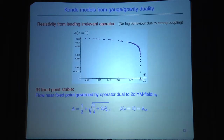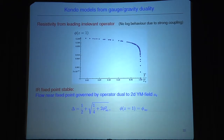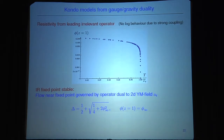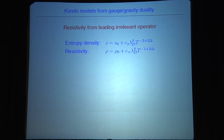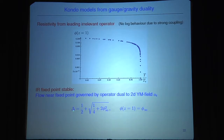In the original Kondo model there was logarithmic behavior of the resistivity. We won't see this because we don't have a free electron gas. Nevertheless, from a simple scaling argument we can determine what our resistivity does: we have a stable IR fixed point, so near this fixed point the dynamics is determined by the leading irrelevant operator, which is dual to the 2d Yang-Mills field. By a variant of the Higgs mechanism this field gives some additional mass to the complex scalar which changes the dimension, and then by a scaling argument we can determine the resistivity, entropy, and density.